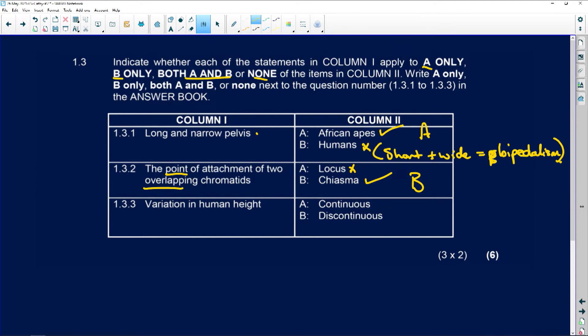So variation in human height. Now, variation can either be continuous or discontinuous. Height is going to be a continuous variation and not discontinuous, and I'll explain to you why.